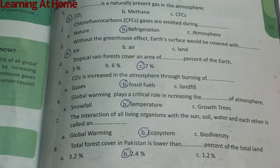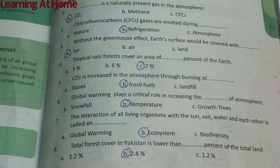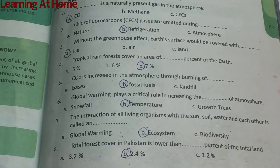Number six: global warming plays a critical role in increasing the blank of atmosphere — temperature. Number seven: the interaction of all living organisms with the sun, soil, water, and each other is called blank — ecosystem. Number eight: total forest cover in Pakistan is lower than blank percent of the total land — the answer is 2.4 percent.